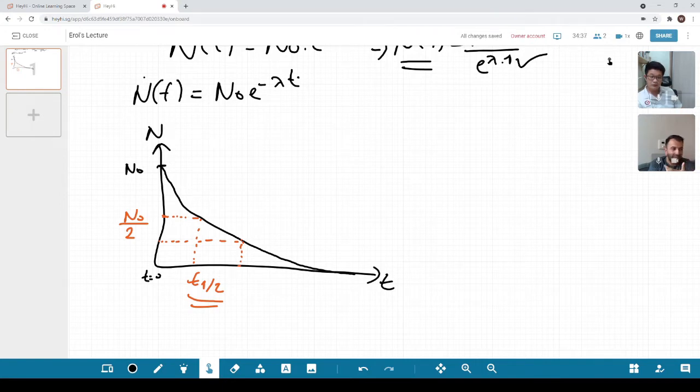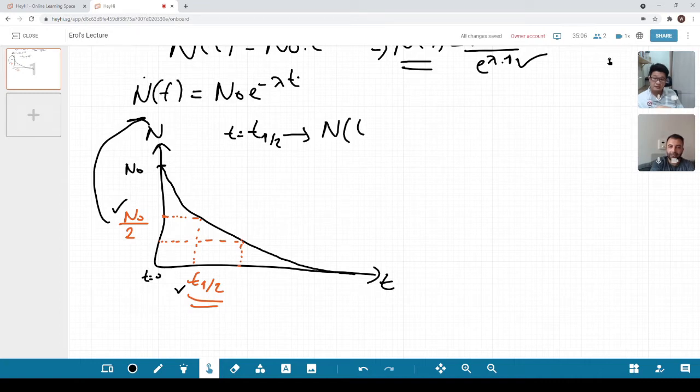So what we need to do now, we have to figure out what happens if I actually plug this sample at this time. Let's just put it in our equation. I'm just going to plug these numbers here. Now our time is equal to half-life. Let's just plug our time at half-life.